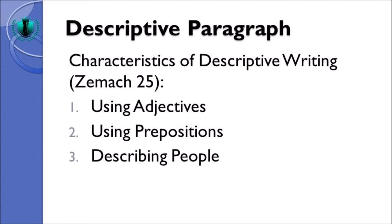What about the characteristics of descriptive writing? From Zimach, page 25, it is stated that there are three characteristics of descriptive writing. The first one is that it uses adjectives. The second one is that descriptive writing uses prepositions to show the location or places of the nouns. The third one is that it is used to describe people. However, descriptive writing is not only used to describe people — it can also describe an event, an object, or anything without a specific spatial ordering.